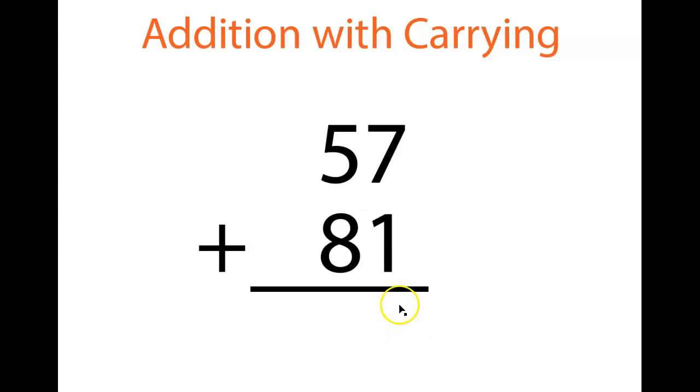Okay, that being said, now we're going to go through the same process. So we add up the ones column. Seven plus one is eight. Well, that's actually really simple. We just write an eight. Okay, so no carrying there, actually.